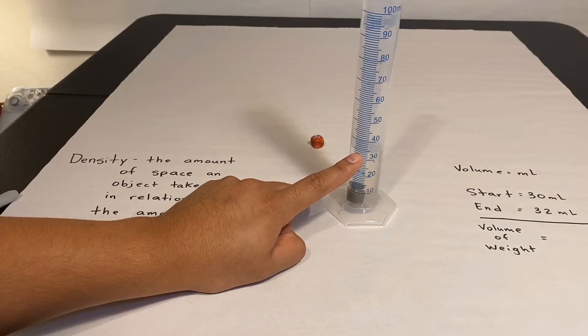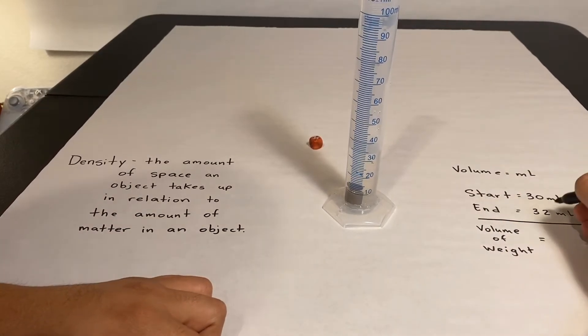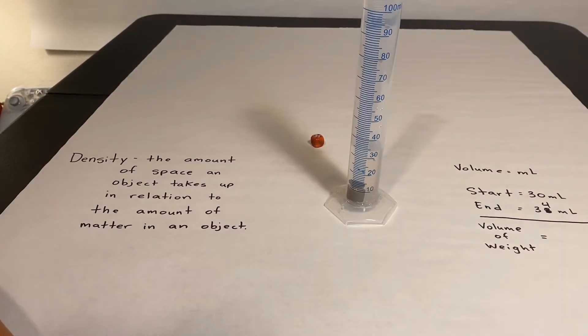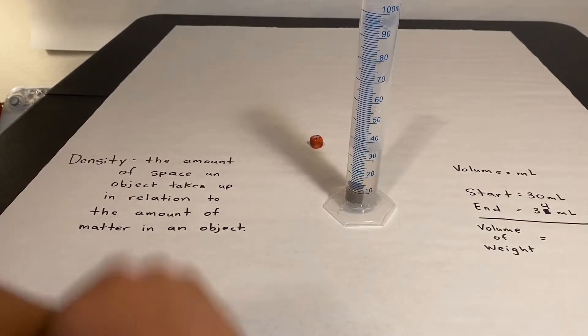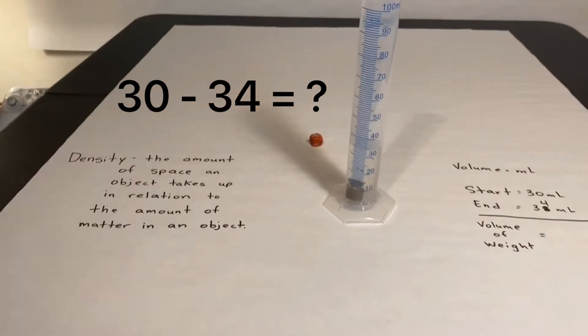Now we're going to look at the difference. Now it definitely did go up, I see that it's right below 34. So we're going to write down the end. So we started at 30 and now we're at 34. In order to find the volume of the weight, we're going to subtract the 30 from the 34.